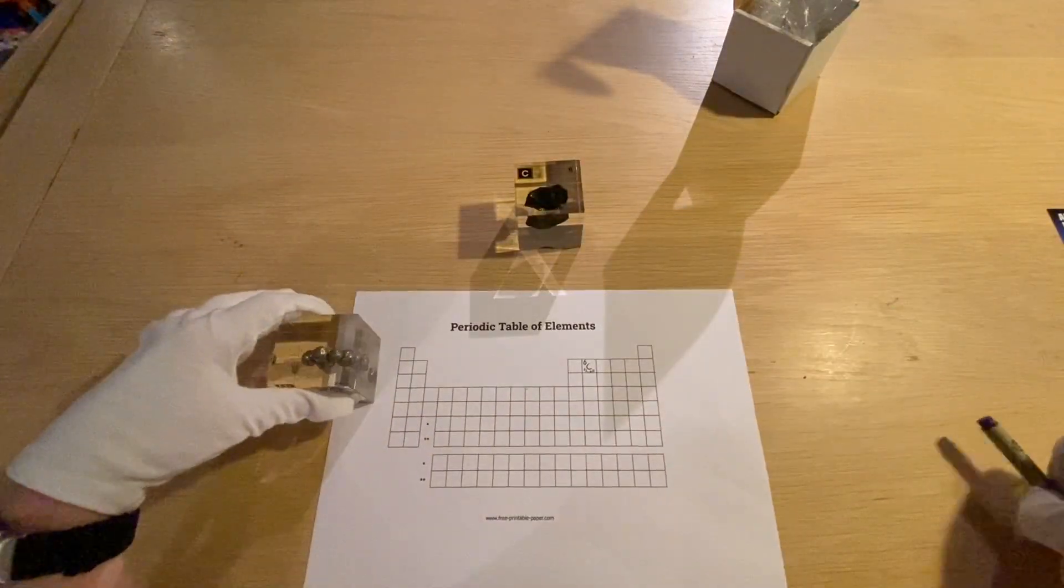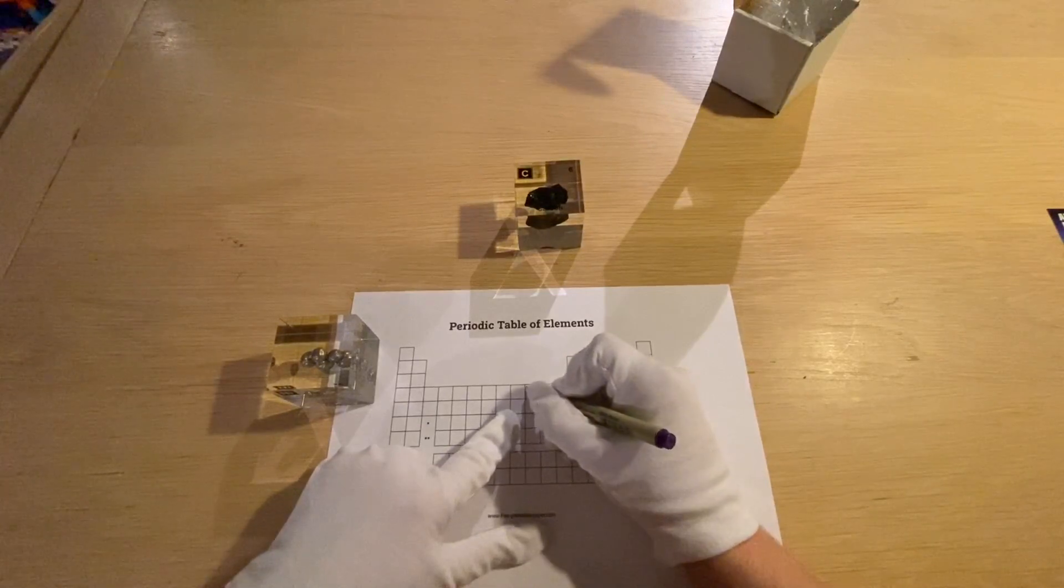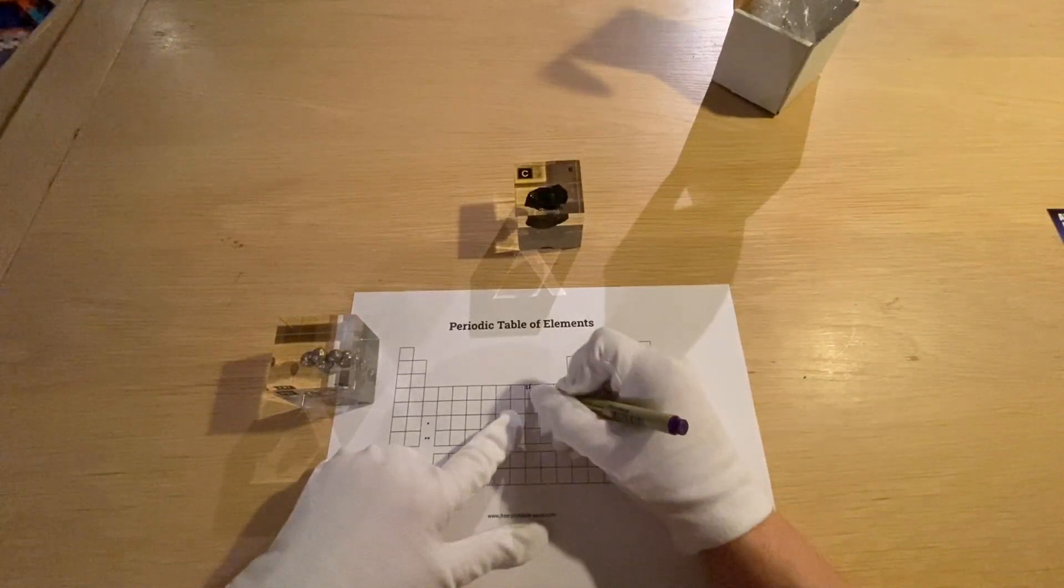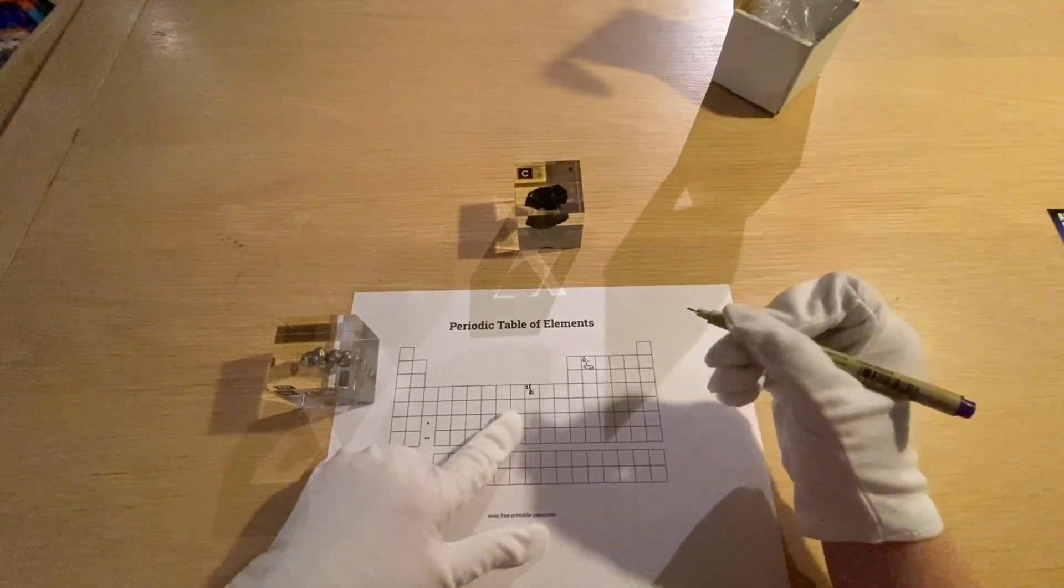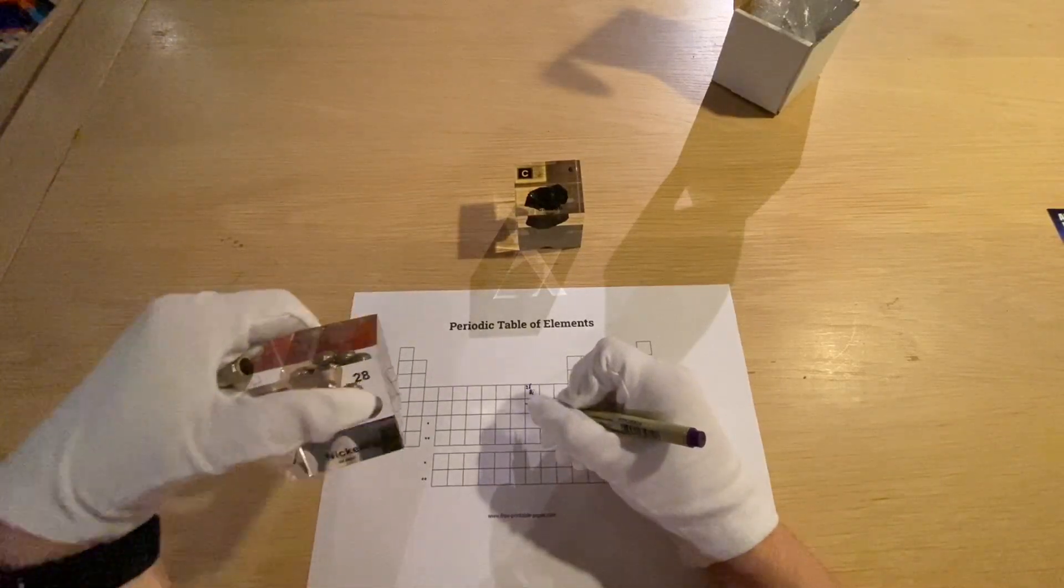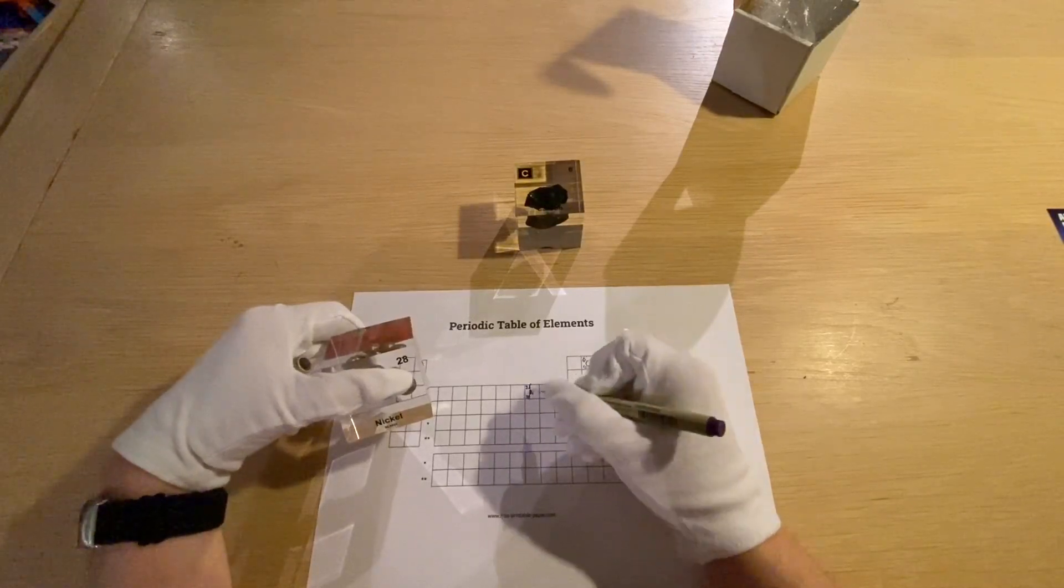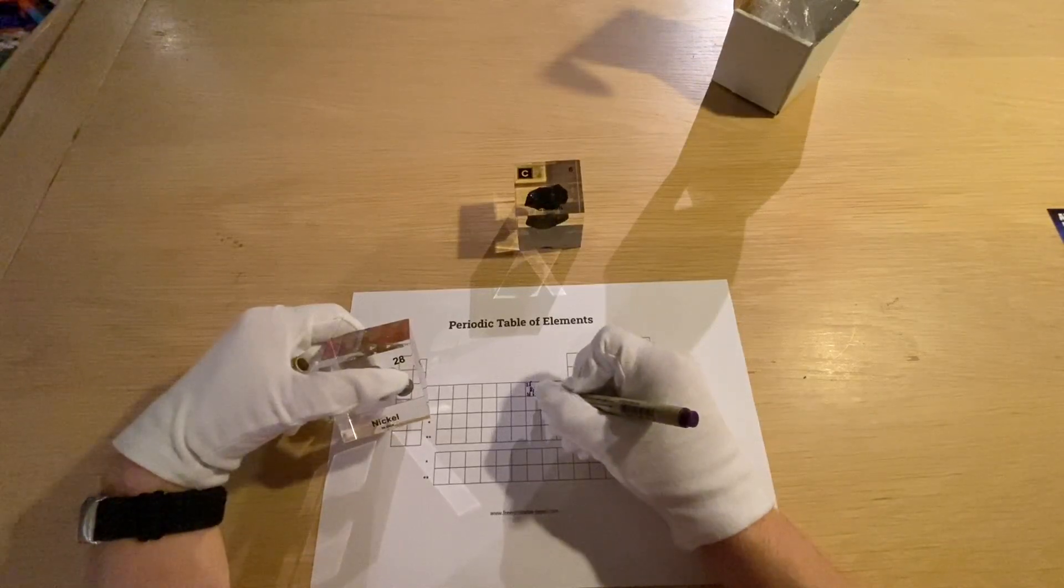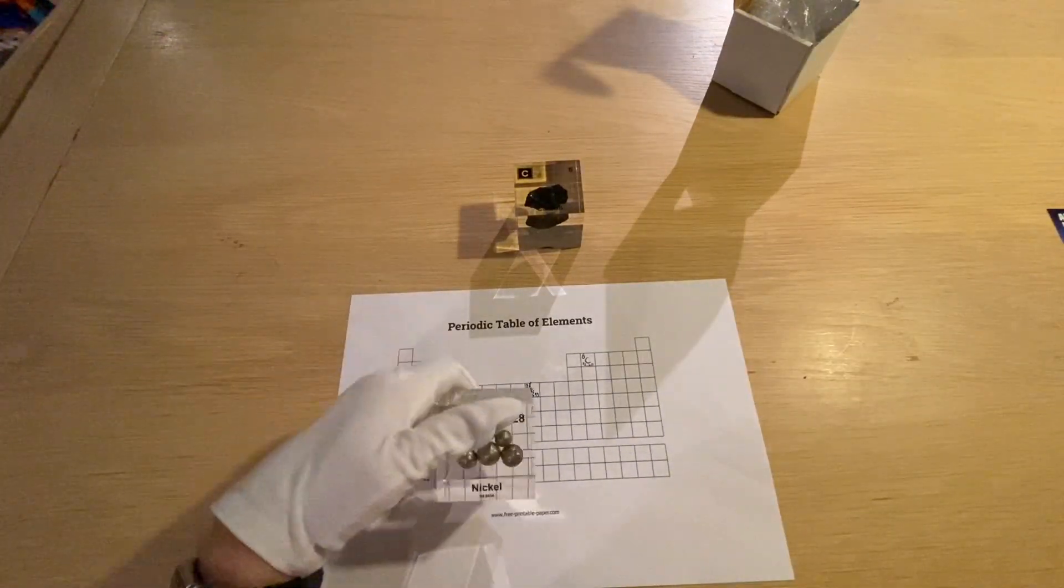So let's write down some properties, shall we? So we got here element 28. Its letters are N and I. And it has an atomic mass of 58.693.